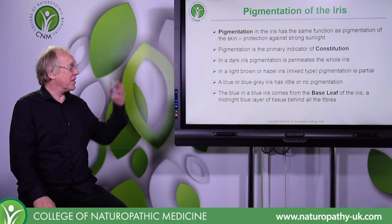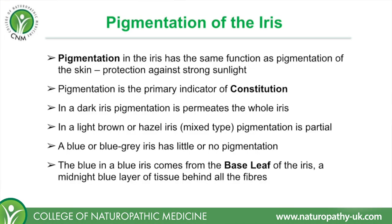Pigmentation in the iris has the same function as it does in the skin: protection against strong sunlight. And pigmentation, or the degree of pigmentation, is the primary indicator of constitution. So primary constitution is a colour typology.